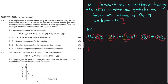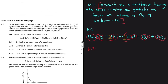Now let's do question 6.1.3, which asks us to calculate the mass of sodium carbonate that reacted (7 marks). We are told Elena added 1.5 grams of sodium carbonate to hydrochloric acid, and a volume of 306 cm³ of carbon dioxide was formed and collected under standard pressure at room temperature. The molar gas volume at room temperature is given as 24.45 dm³.